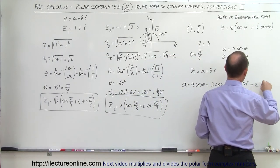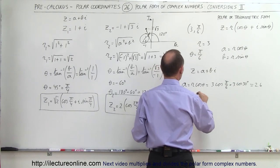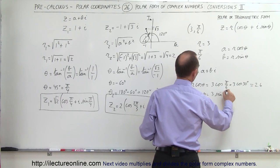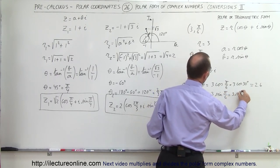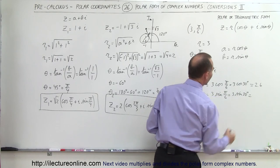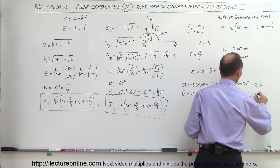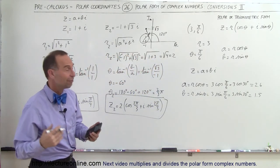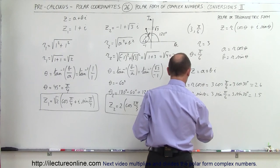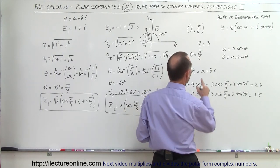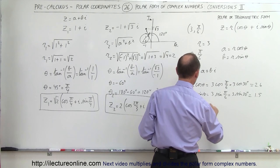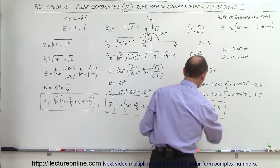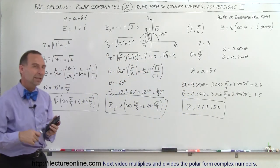For b: b equals r times sine of theta, which is 3 times sine of pi over 6, or 3 times sine of 30 degrees. Since sine of 30 degrees is 0.5, b equals 1.5. Therefore the complex number is z equals 2.6 plus 1.5i. That is how we convert from polar coordinates to a complex number.